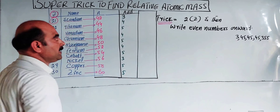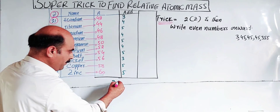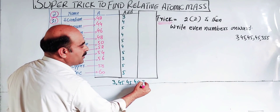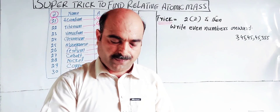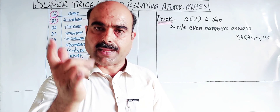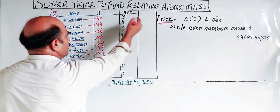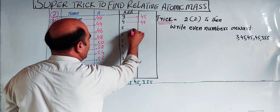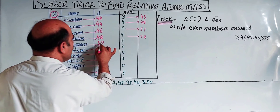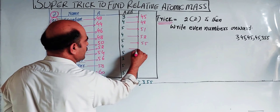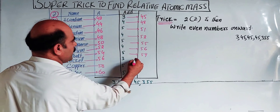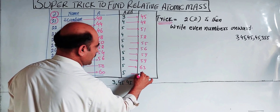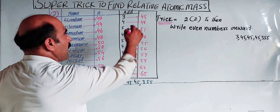For elements 21 to 30, the mass numbers are approximately: Scandium 45, Titanium 48, Vanadium 51, Chromium 52, Manganese 55, Iron 56, Cobalt 58, Nickel 58, Copper 63, Zinc 64. You can see patterns like 45 repeating for certain elements in this group.